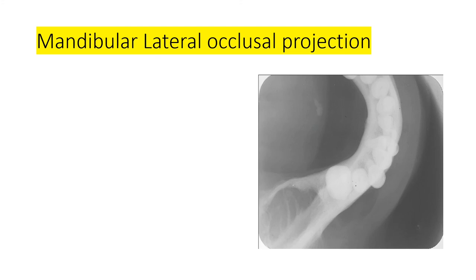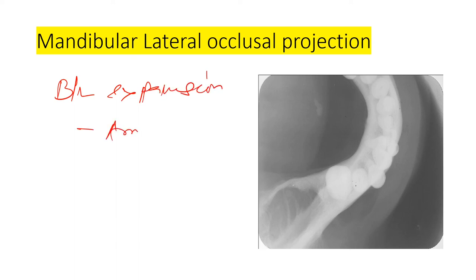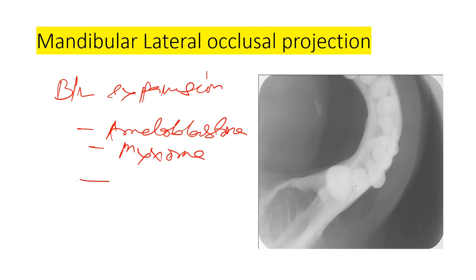The mandibular lateral occlusal projection is used to see buccolingual expansion, which occurs due to pathologies such as ameloblastoma, odontogenic myxoma, and OKC (odontogenic keratocyst). In these conditions there is buccolingual expansion, and this projection is used to assess it.